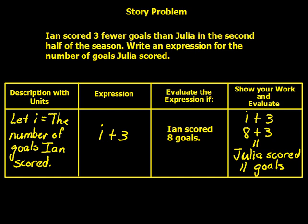Ian scored three fewer goals than Julia in the second half of the season. Write an expression for the number of goals Julia scored. Let I equal the number of goals Ian scored. Since Ian scored three fewer than Julia, Julia scored three more, so we do I plus 3. If Ian scored eight goals: I plus 3 equals eight plus 3 equals eleven. Julia scored eleven goals.